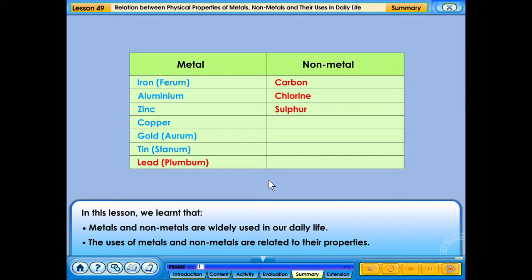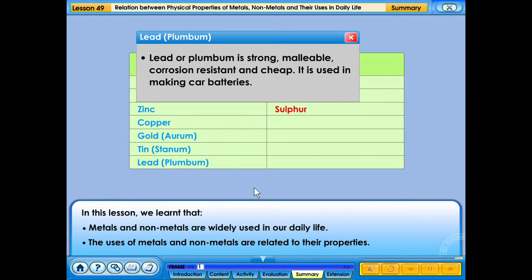Lead or plumbum is strong, malleable, corrosion resistant and cheap. It is used in making car batteries.